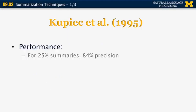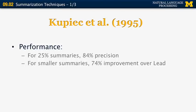The performance of Kupiec's system was 84% precision compared to gold standard summaries at the 25% level, and a 74% improvement over a lead-based summary when producing the shorter 25% summaries. This is more encouraging for research than the Brandow paper.